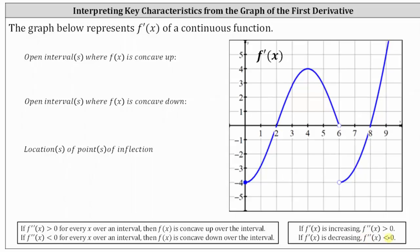So because we're given the graph of the derivative function and asked about concavity, we need to determine the open intervals for which f prime of x is increasing as well as decreasing. Analyzing the graph from left to right, f prime of x is increasing over the open interval from zero to four, then decreasing over the open interval from four to six, and then increasing again over the open interval from six to infinity.